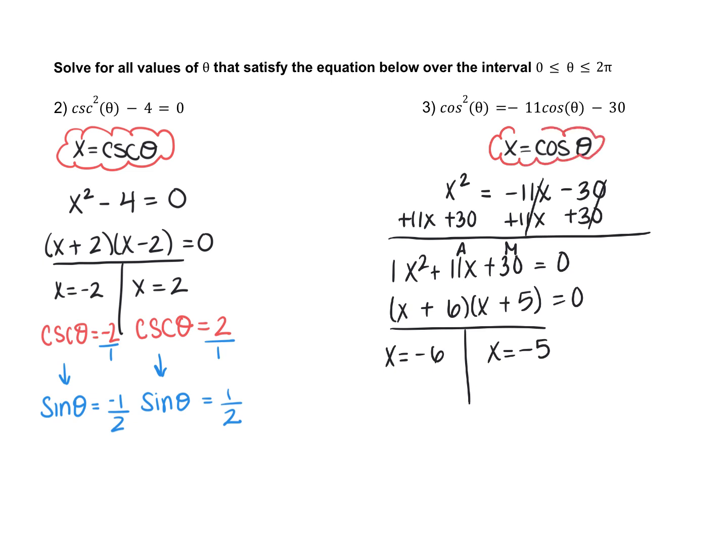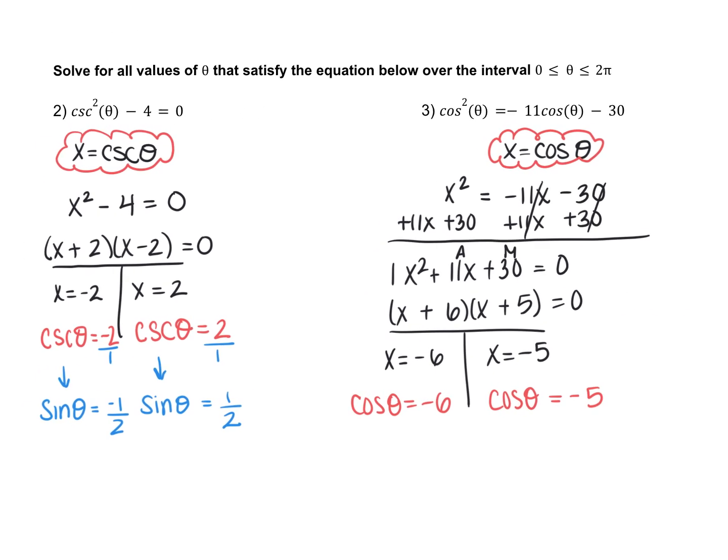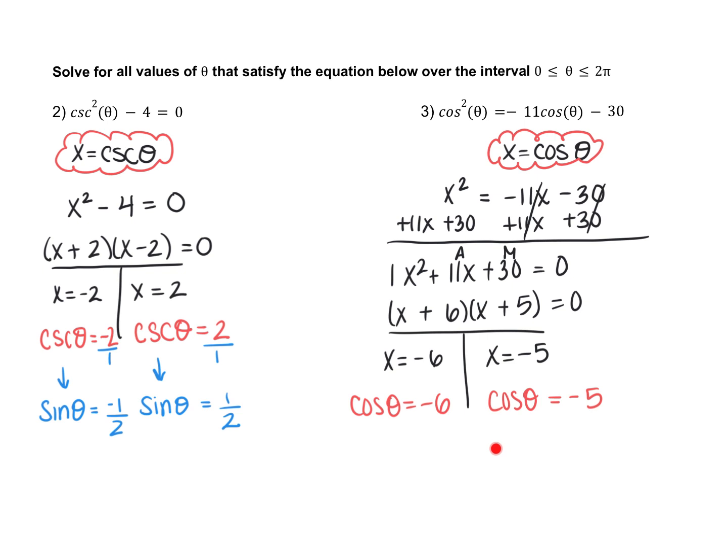We'll do a nice t-chart. x equals negative 6 and x equals negative 5. Since we let x equal cosine of theta, we're going to put that back in. So cosine of theta equals negative 6, cosine of theta equals negative 5. What you're going to do now is try to find the values that make sense here and here. That's how we'll start class tomorrow. But please make sure when you're finalizing your answers, you use the interval from zero to two pi. So that means you're putting your final answer in radians.